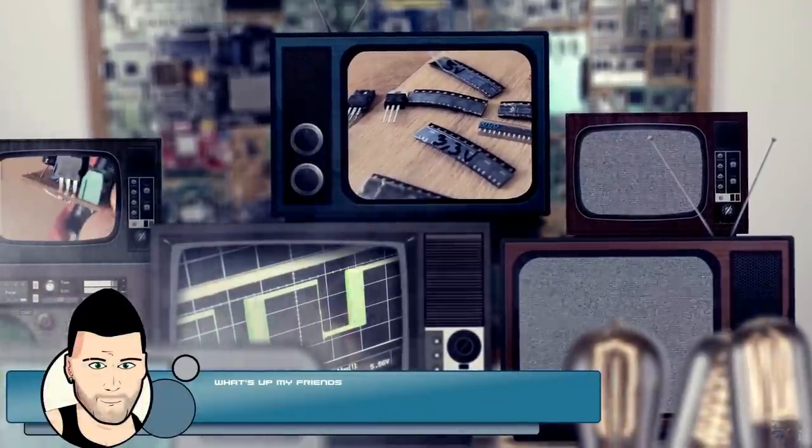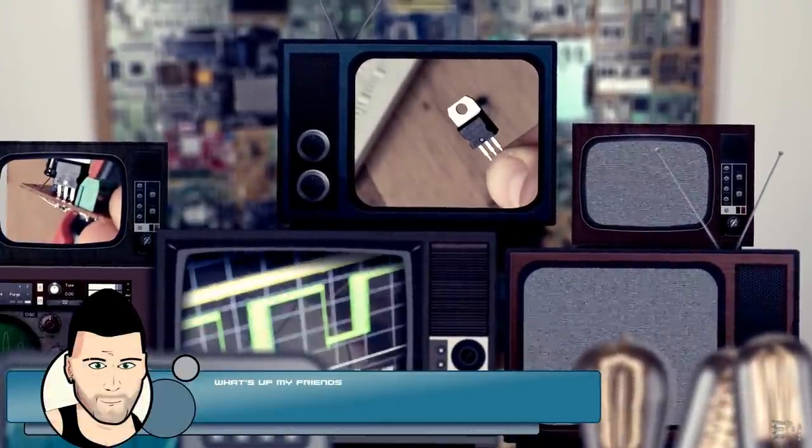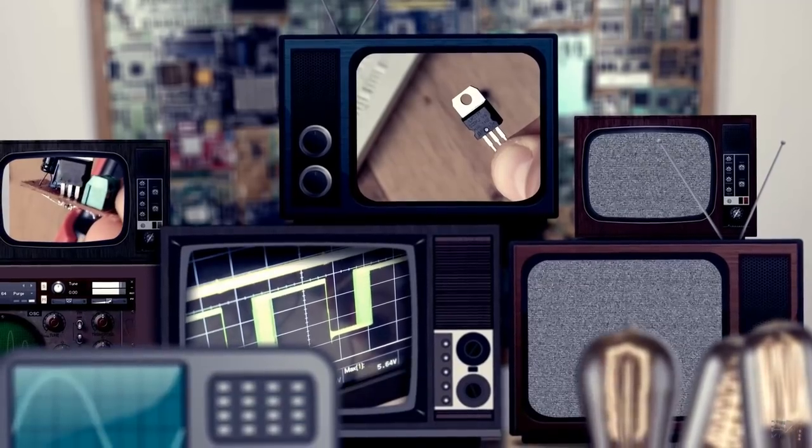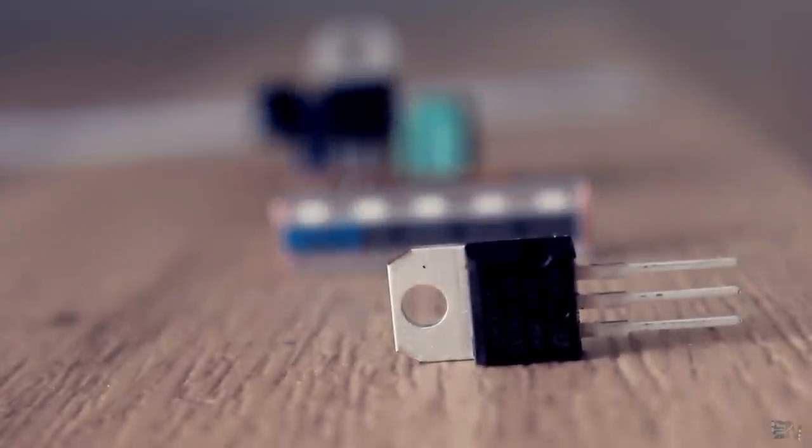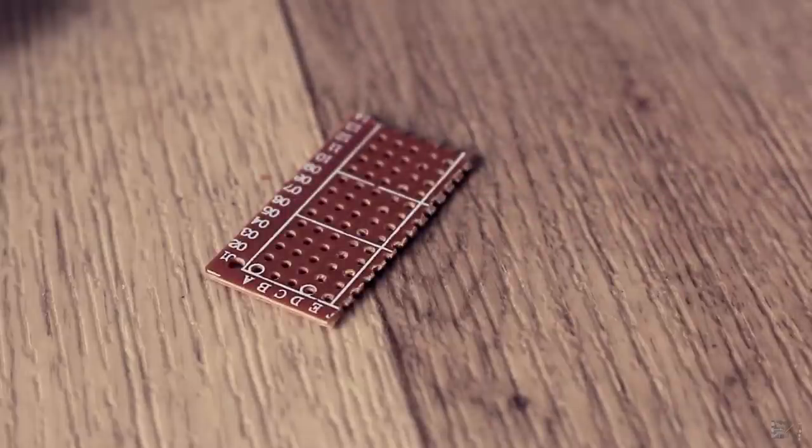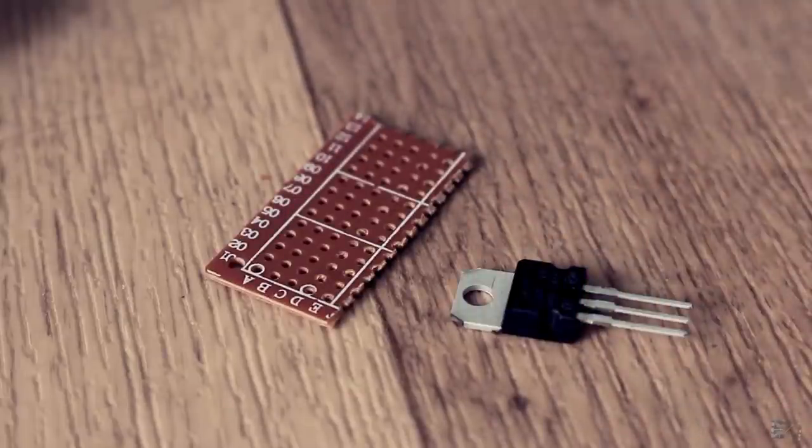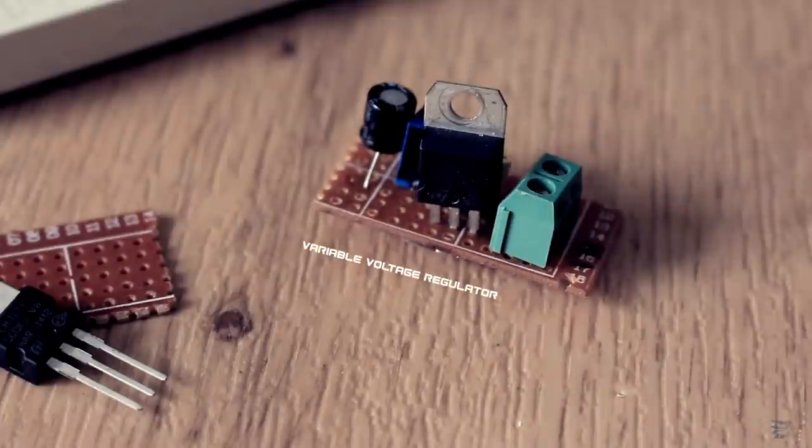What's up my friends, welcome back. In previous videos I often talk about linear voltage regulators, like for example the AMS1117 or the LM317. These ICs are so easy to use. Just solder them on your PCB, add some capacitors to reduce noise and that's it.